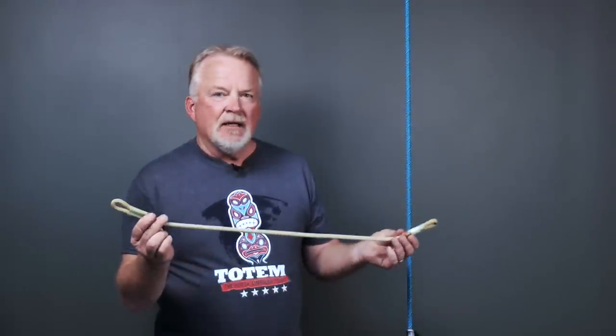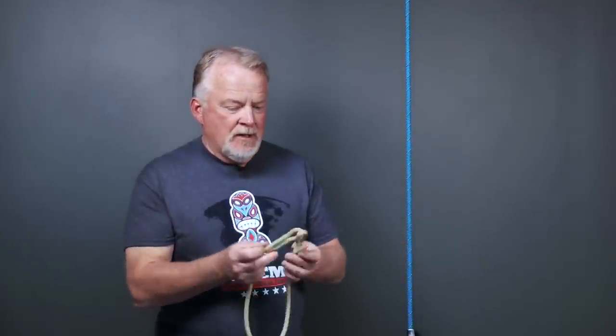Because it's an eye-to-eye Prusik instead of a loop, there's quite a few unique kinds of hitches that we can tie with it. But first, an explanation of how Prusiks work.